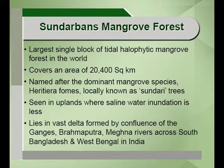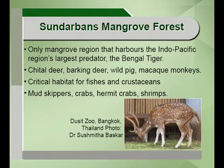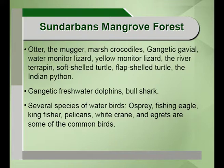The Sundarban mangrove forest is the largest single block of tidal halophytic mangrove forest in the world. It is named after the dominant mangrove species Heritiera fomes, locally known as Sundari trees in India, seen in uplands where saline water inundation is less. It lies in the delta formed by the confluence of the Ganges, Brahmaputra and Meghna rivers across South Bangladesh and West Bengal. This is the only mangrove that harbours the Indo-Pacific's largest predator, the Bengal tiger. Other fauna include cheetal deer, barking deer, wild pigs, macaque monkeys, fishes, crustaceans, mudskippers, crabs, hermit crabs and shrimps.